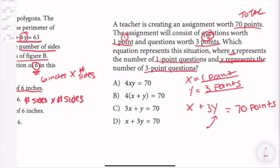So say if there was like 10 three-point questions, this value would be equal to 30. Because each question is three points. So that's why it's 3y. So the correct answer choice here is D.